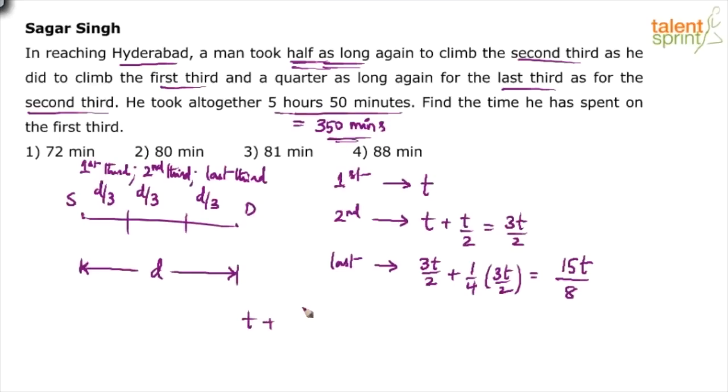So I can say t plus 3t by 2 plus 15t by 8 is equal to 350 minutes. Simplify for t, solve for t. LCM is 8. So we will get 8t plus 2 goes 4 times. So 12t plus this is as it is 15t equals to 350.